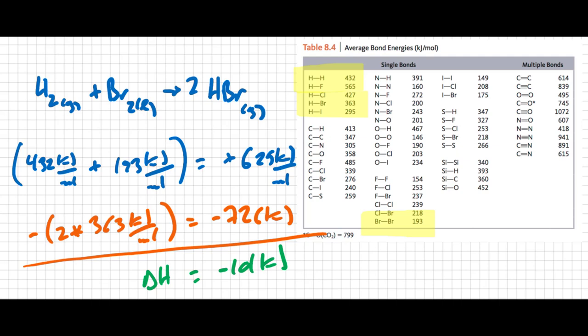So this is an exothermic process. This value is an approximation. There's more to finding the delta H for a reaction than simply breaking and forming new bonds. You also have to account for changes in states of matter. But this gives you a good idea that this is an exothermic reaction and about how much energy you can expect to be released.